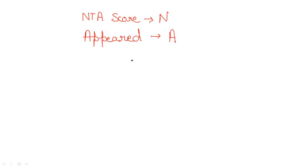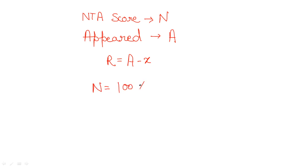Next, you need to find the value of x. Your rank will be equal to the appeared students minus x, but we need to find x first. To do that, use the formula: NTA score N = 100 × x / appeared students from your same stream.